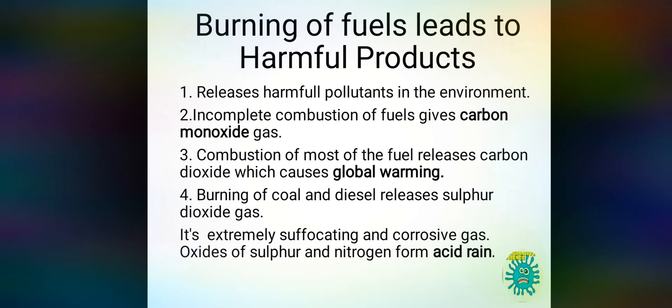Because of carbon dioxide, Earth's temperature increases — this is global warming — causing glaciers to melt and climate change. Also, burning coal and diesel releases sulfur dioxide and nitrogen dioxide gases, which react to form acid rain. Acid rain is harmful to water bodies, crops, and even causes skin problems when it falls on our body.